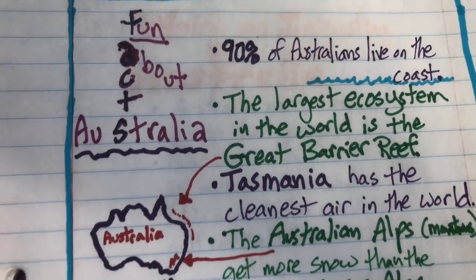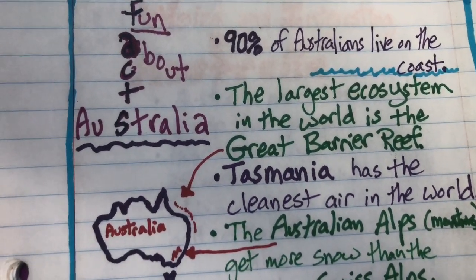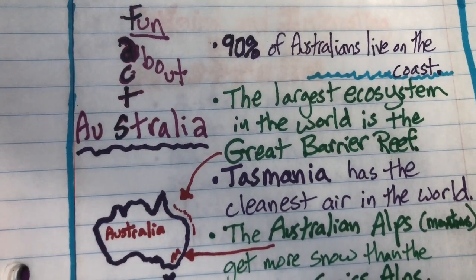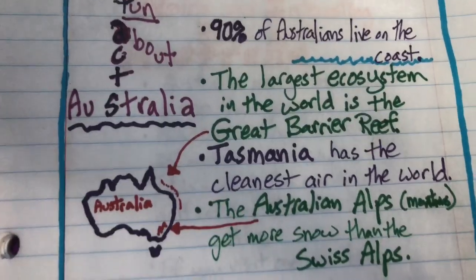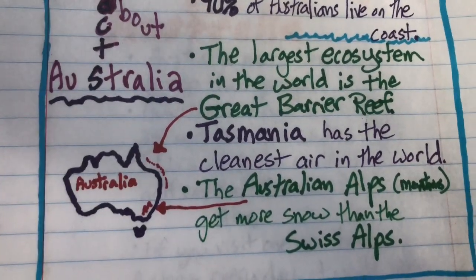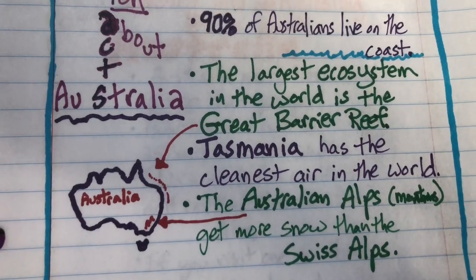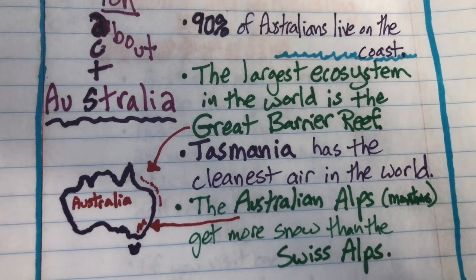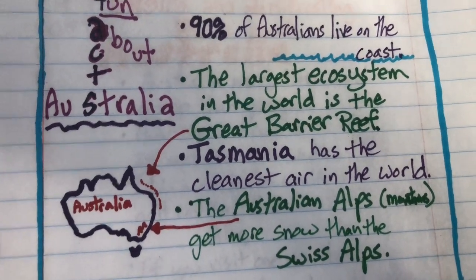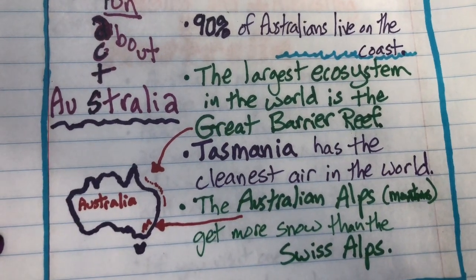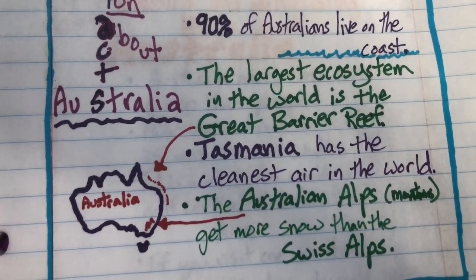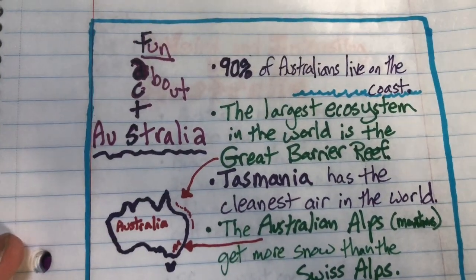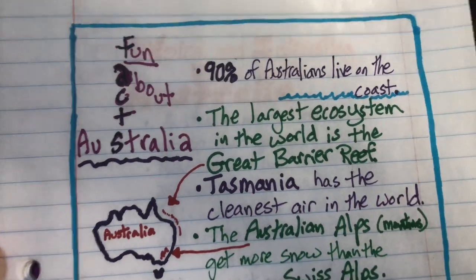The largest ecosystem in the world is the Great Barrier Reef, and I have an arrow that kind of points to what I was attempting to draw, which is Australia — you can see it's kind of in the northeast section of the continent. Tasmania has the cleanest air in the world. The Australian Alps get more snow than the Swiss Alps, which are in Switzerland — people think of Switzerland as being a very cold and snowy place and a famous place for skiing.